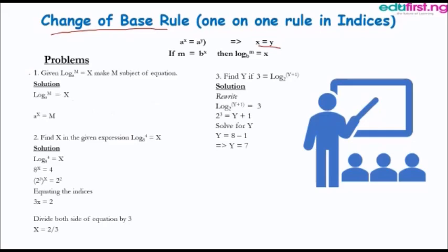We have some problems here. Problem 1 says: given that log M to base A equals X, make M the subject of the equation. What we do is raise the base A to power X on the other side of the equation. Everything will then be equal to M — that is, M equals A raised to power X. That's how we get this expression.